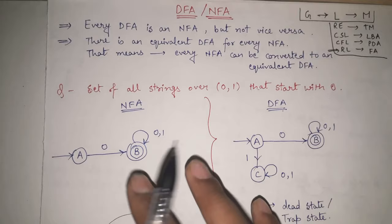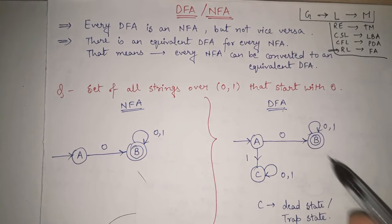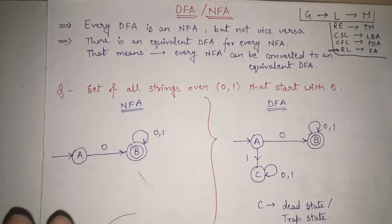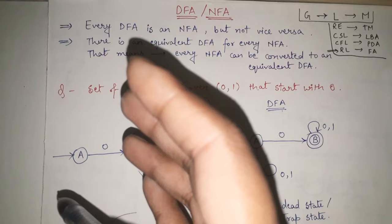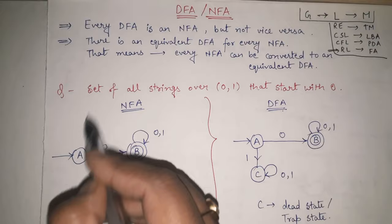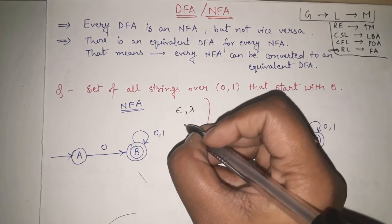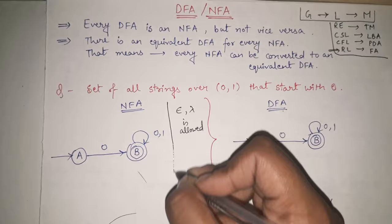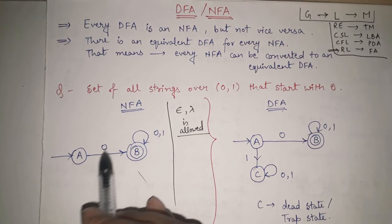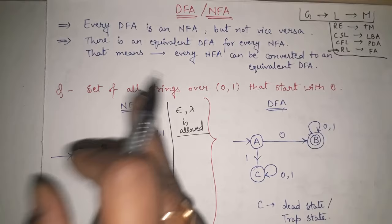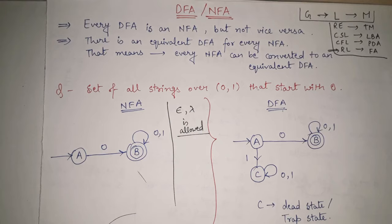The structure of both NFA and DFA is the same — both have states, edges or transitions, an initial state, and a final state. However, there are key differences. The first difference: in NFA, null or lambda transitions are allowed. For example, a transition on lambda (ε) is permitted in NFA, whereas any null or lambda transition is not allowed in DFA.